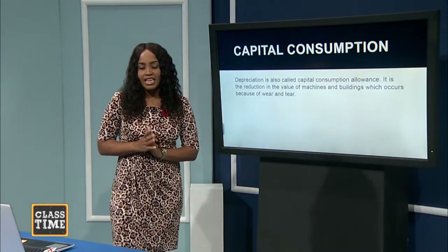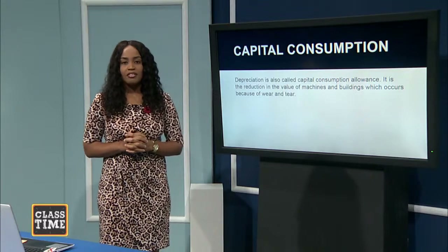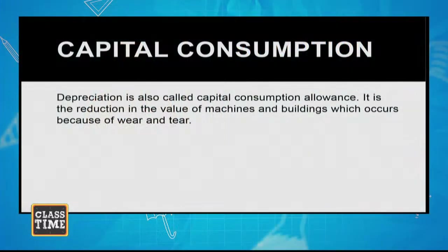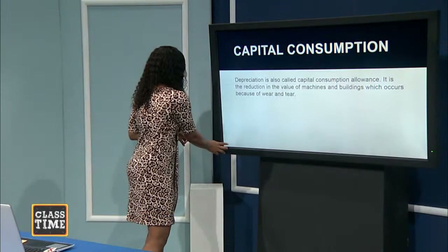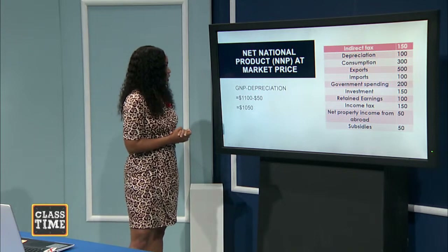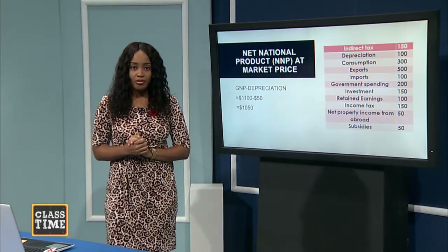One important thing to mention is capital consumption allowance, otherwise known as depreciation. When countries have capital as a factor of production and it is used daily or over any period, things get worn out. An adjustment must be made in GDP to account for the need to replenish, upgrade, or purchase new machines to replace those that are worn out — that is why we have an allowance for capital consumption.